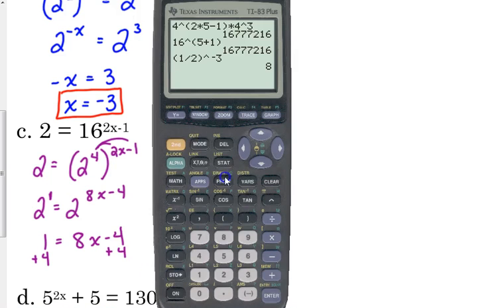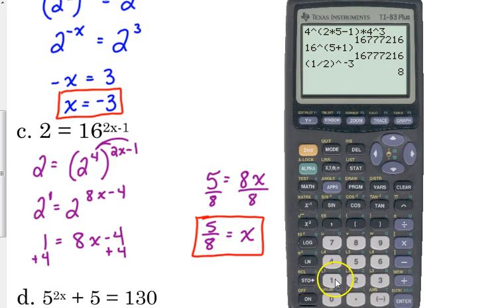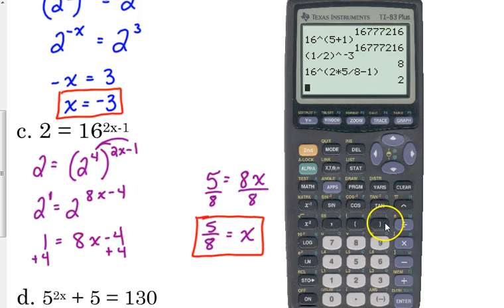And we can check it. Make sure you put it in parentheses. 16 raised to the 2 times 5 over 8 minus 1. That is 2.